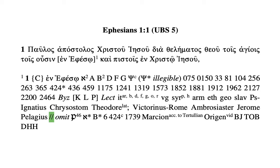The Latin (Western) fathers listed are Victorinus of Rome, Ambrose, Ambrosiaster, Jerome, and Pelagius — all again in support of the inclusion of 'in Ephesus' in the text. The double slash signals a move to another reading within this variation unit. In this case there are only two possibilities: the inclusion of 'ἐν Ἐφέσῳ' and the omission of 'ἐν Ἐφέσῳ.'